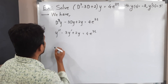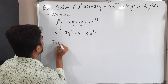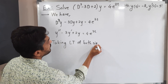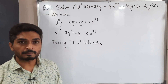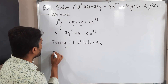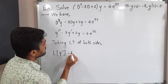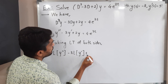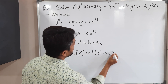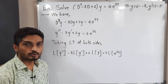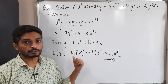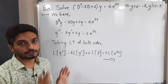Taking Laplace transform of both sides. When we have addition or subtraction, we take separate Laplace transforms and constants go outside. So we get: L{y''} - 3·L{y'} + 2·L{y} = 4·L{e^(2t)}. We call this equation 1. Now we need to calculate L{y''} and L{y'} and put those values into equation 1.